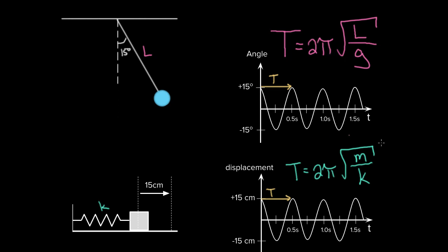One obvious similarity between these two formulas is their format: both are two pi times the square root of a ratio. Another important similarity is that neither formula depends on the amplitude of the motion. The period of a pendulum does not depend on amplitude, and neither does the period of a mass on a spring. If you pull this pendulum back 20 degrees instead of 15, it has farther to swing, but it takes the exact same amount of time — the period does not change.